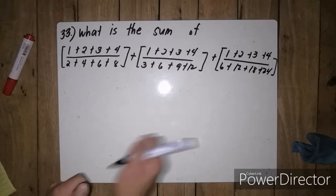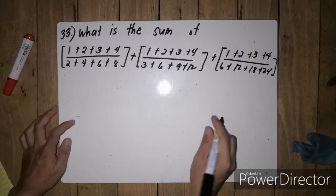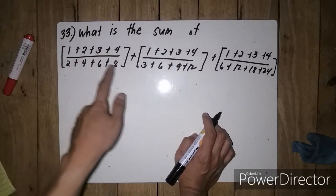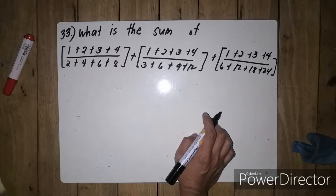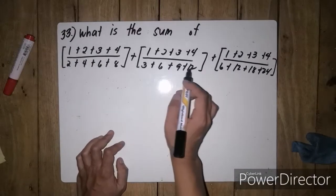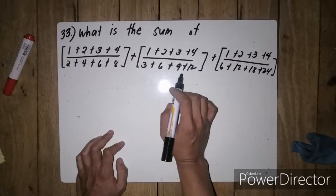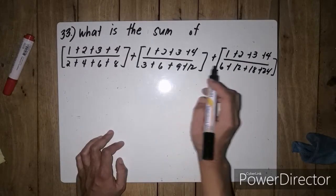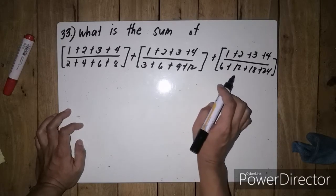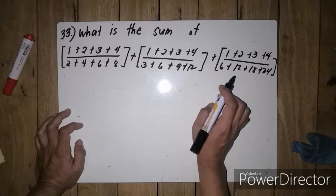For question number 33, what is the sum of 1 plus 2 plus 3 plus 4 divided by 2 plus 4 plus 6 plus 8, plus 1 plus 2 plus 3 plus 4 divided by 3 plus 6 plus 9 plus 12, plus 1 plus 2 plus 3 plus 4 divided by 6 plus 12 plus 18 plus 24?